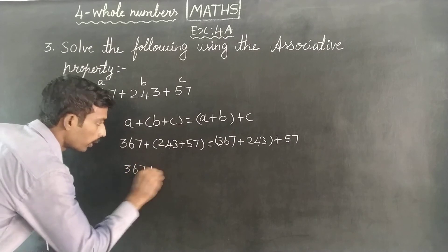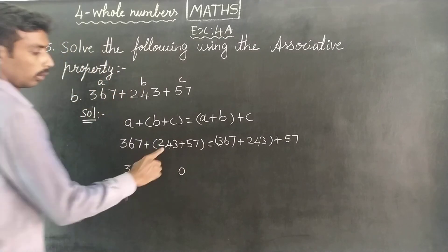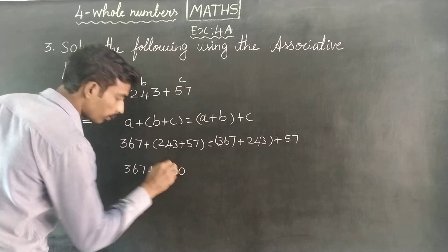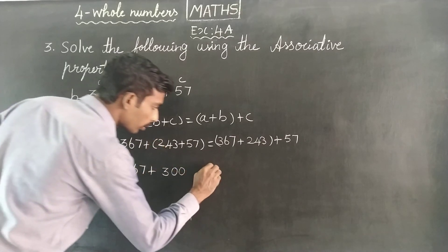Computing 243 plus 57: 3 plus 7 is 10, carry 1. 4 plus 5 is 9, plus 1 is 10, carry 1. 2 plus 1 is 3, equals 300.